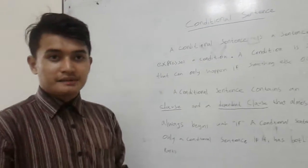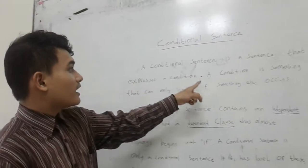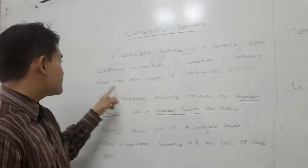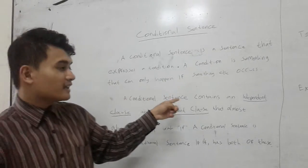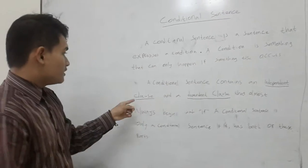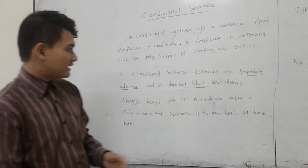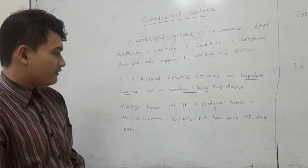What is a conditional sentence? A conditional sentence is a sentence that expresses a condition. A condition is something that can only happen if something else occurs. A conditional sentence contains an independent clause and a dependent clause that almost always begins with if.